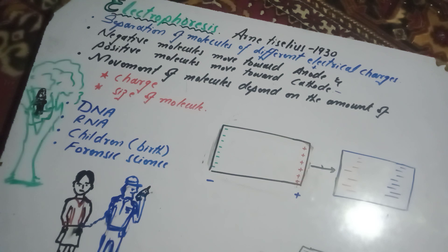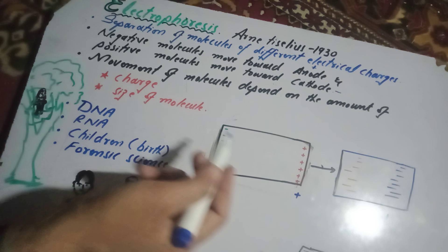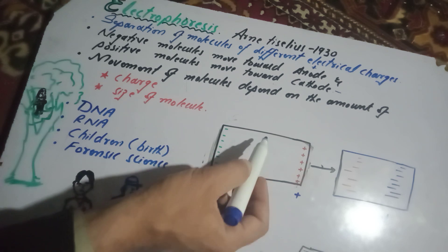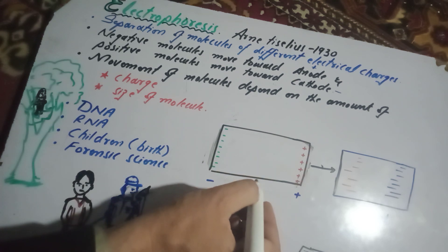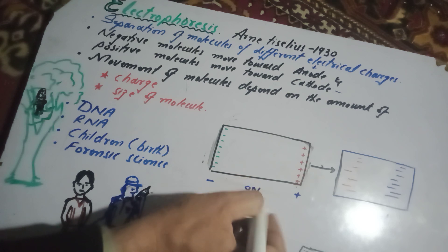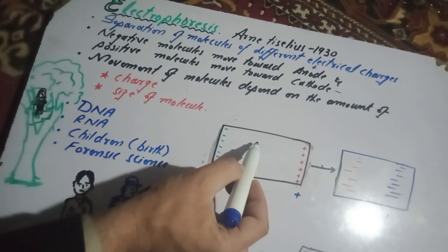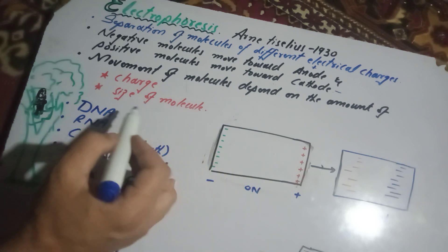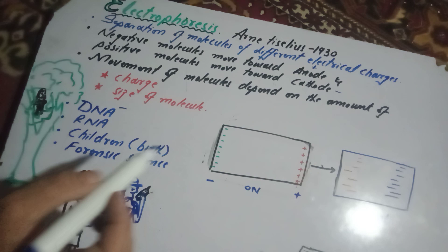Electrophoresis is used for the separation of DNA. For example, DNA is negatively charged. In electrophoresis, the DNA sample is loaded and the electric field is provided. Because DNA is negatively charged, the movement is towards the positive charge, that is, towards the anode.